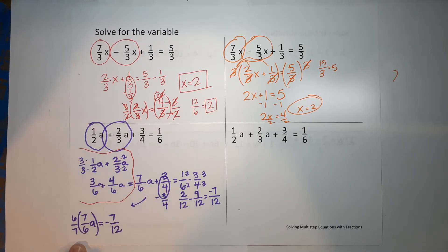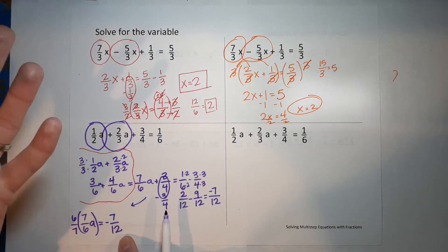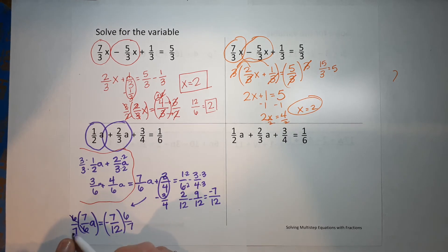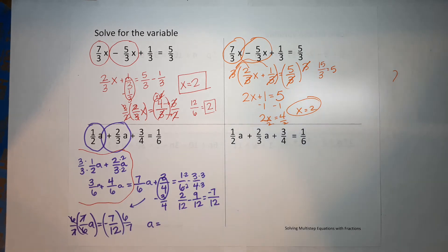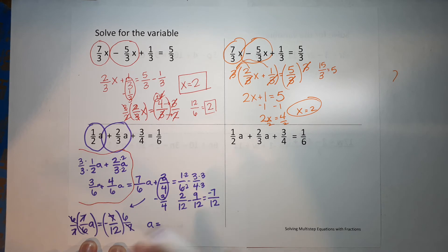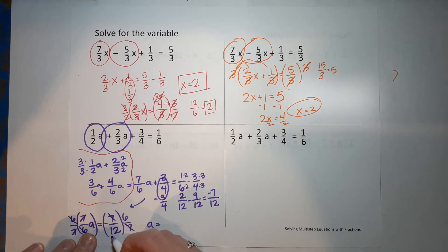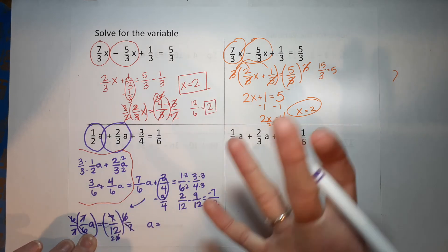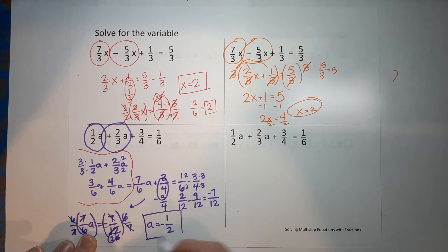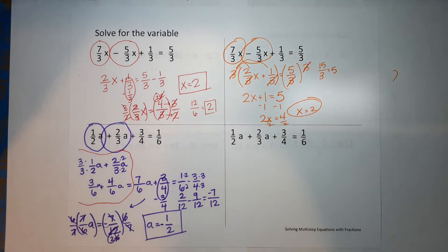I need to multiply by the reciprocal of 7/6, which is 6/7, because I'm trying to get a alone. Multiply both sides by 6/7. On the left, 6 over 6 is 1 and 7 over 7 is 1, so I'm left with just a. On the right, I notice 7 over 7 cancels to 1, and 12 can be written as 2 times 6, so that 6 cancels with the 6 on top. Don't forget the negative — I'm left with negative 1 over 2. So a equals negative 1/2.